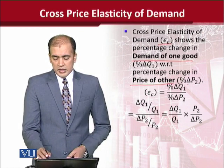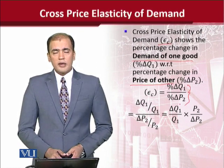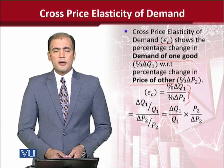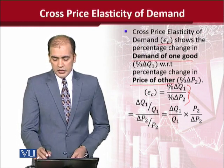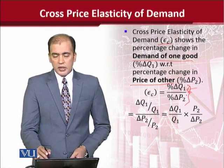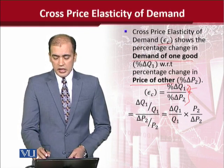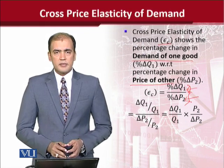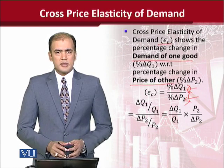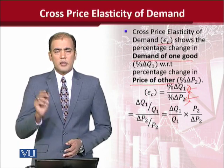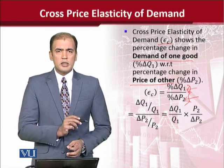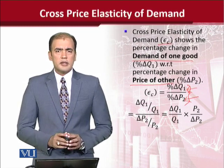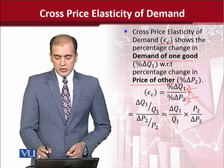In specific terms, this formula shows the cross price elasticity of demand. You can see this is the first good and its quantity, and this is the second good and its price. Hence 'cross' is used because it shows the effect of one variable related to the other variable and vice versa.